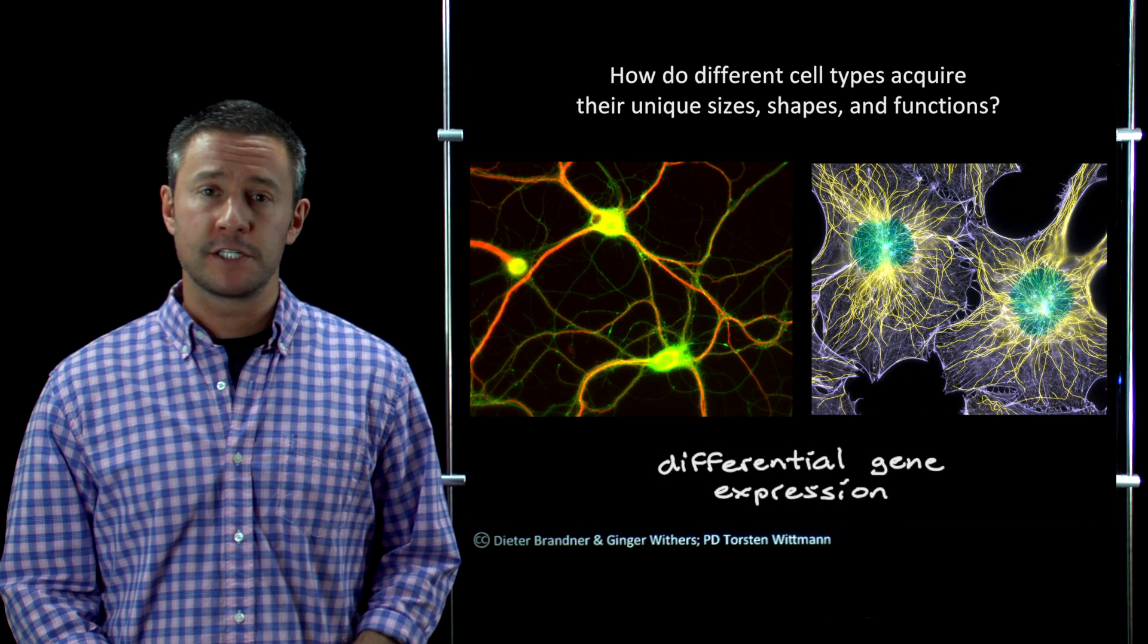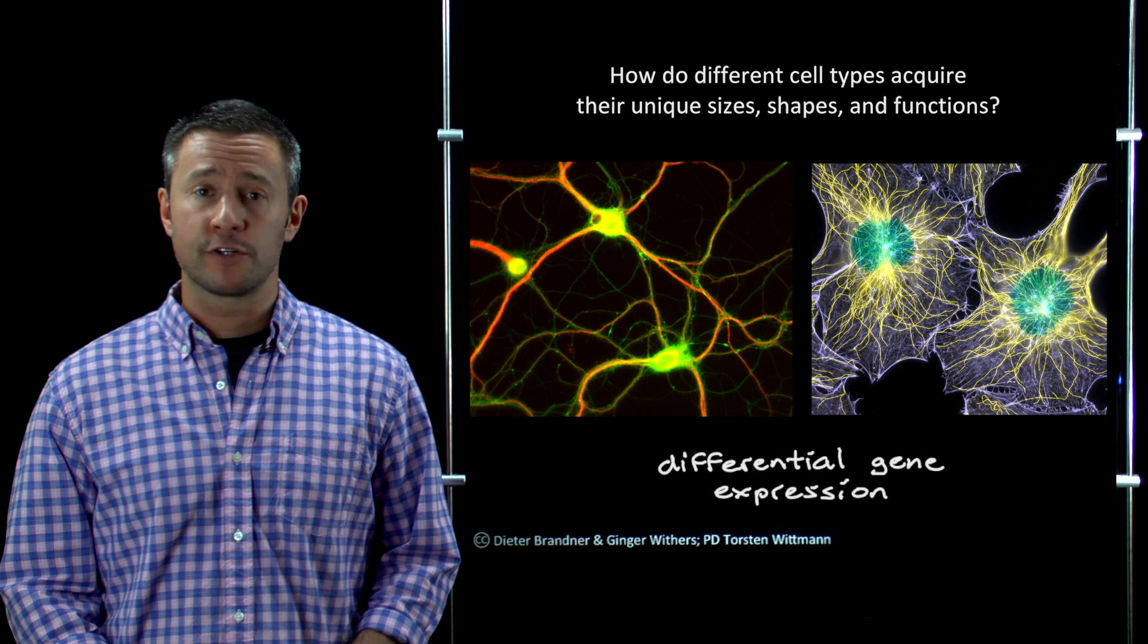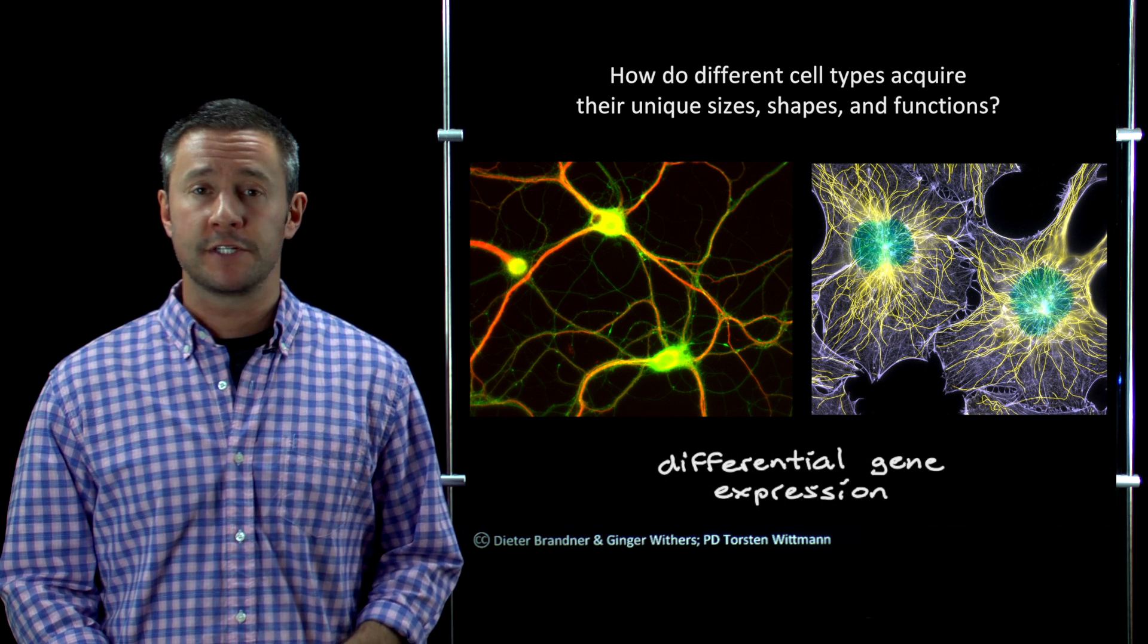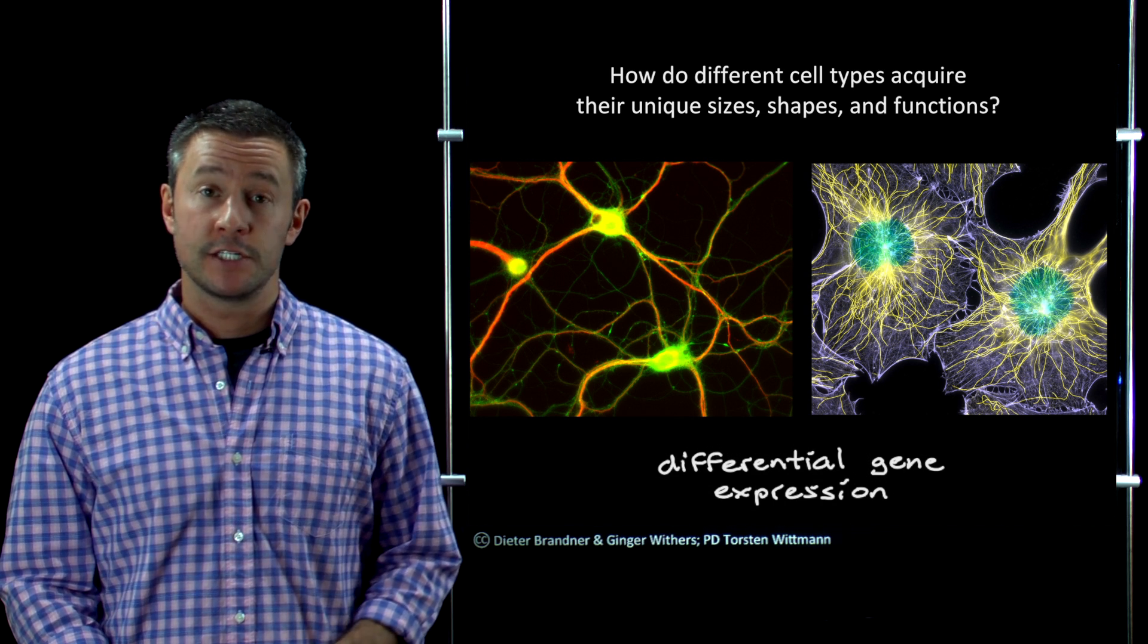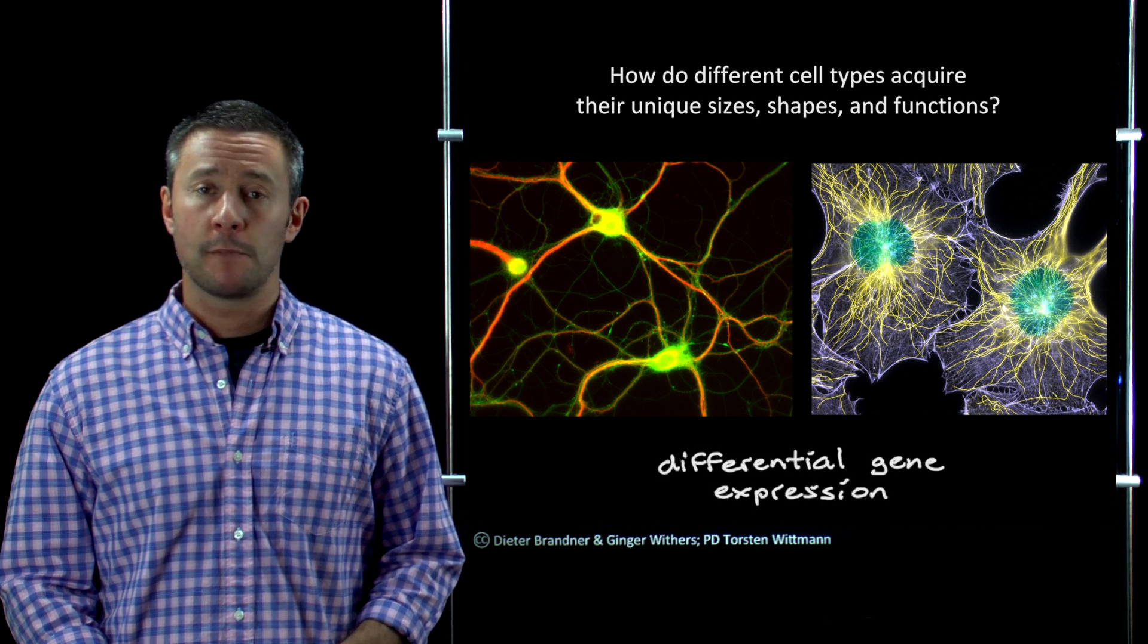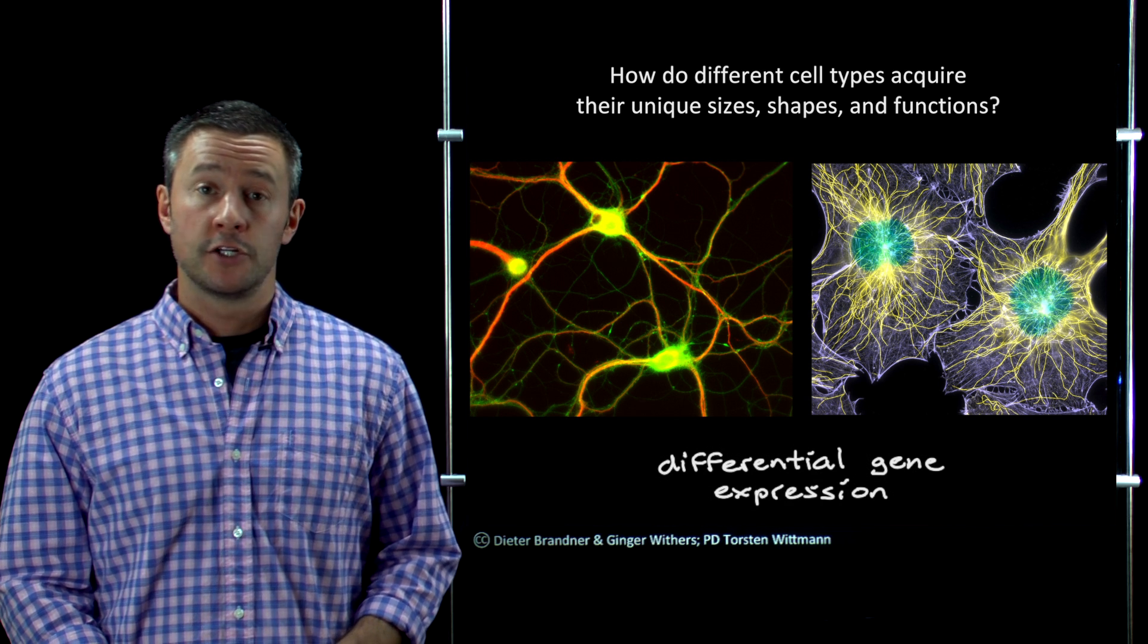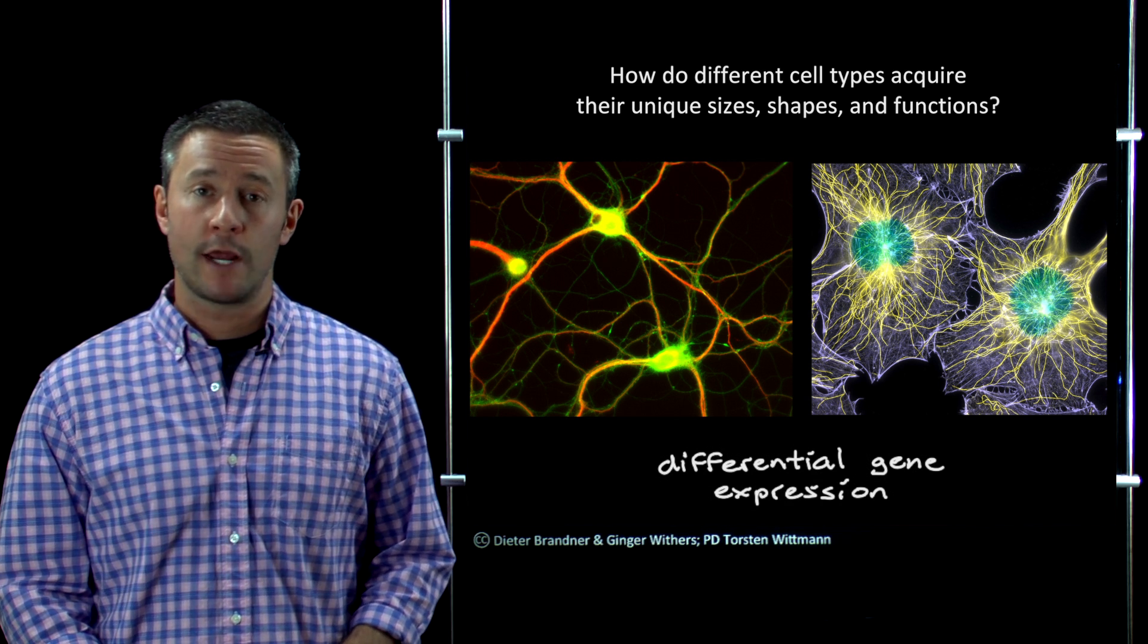What this means is that different cell types express different sets of genes and that's what accounts for differences between those cell types, not differences in which genes are present. Now that's a key concept in developmental biology and so we'll spend a lot of time later in the course talking about how gene expression is regulated.